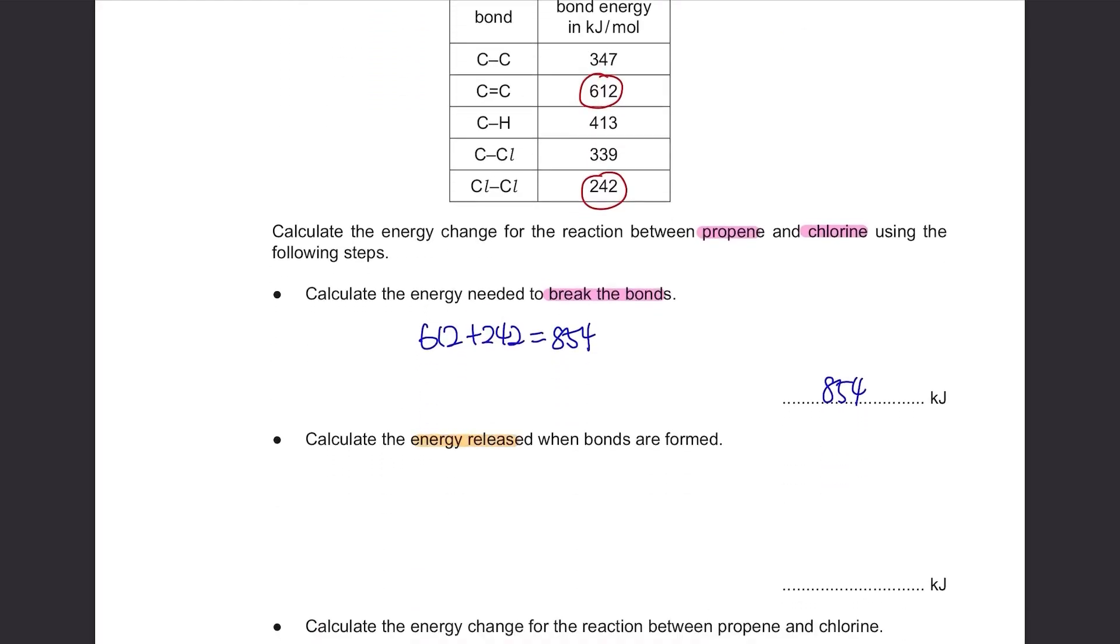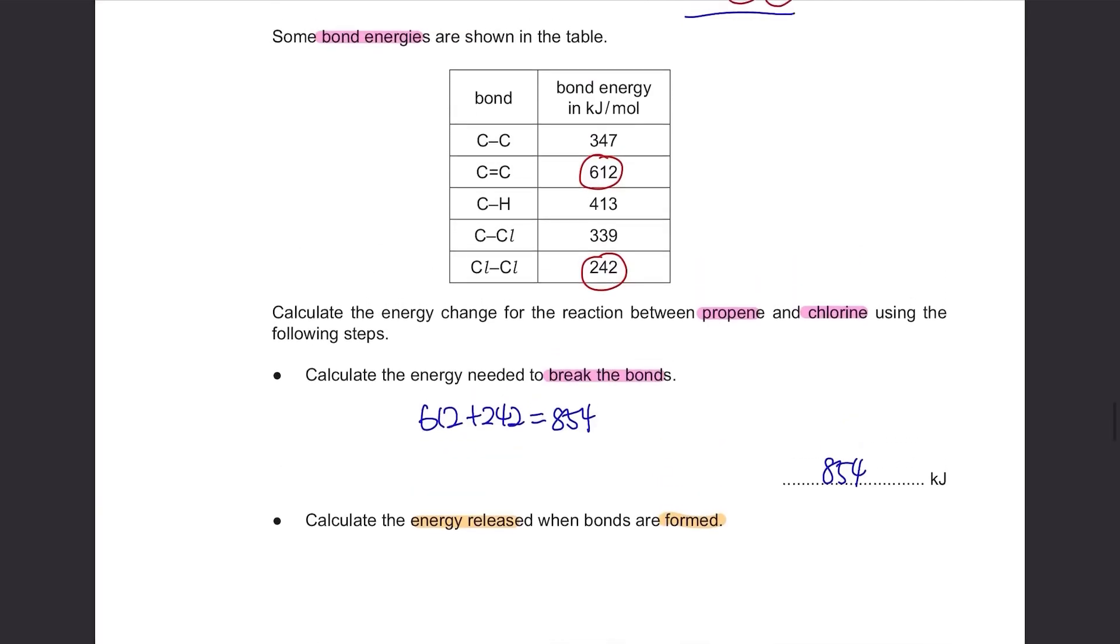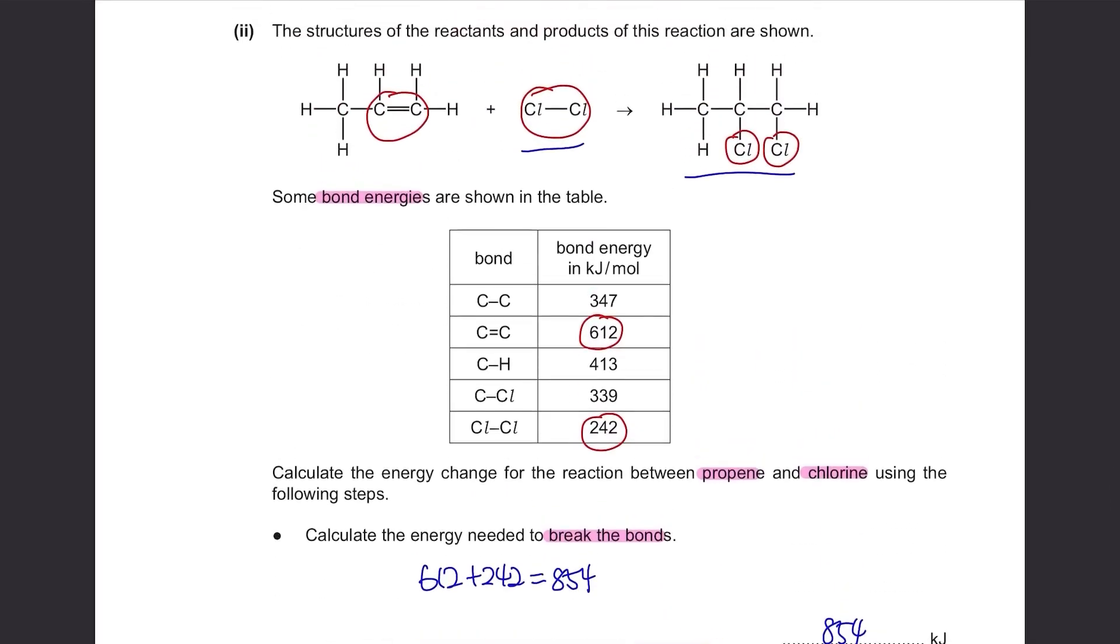Calculate the energy released when bonds are formed. This time it's when it's formed, so we need to find it from the product side. We have broken this bond and this bond. So the new bonds that are formed are over here, and also these two C-Cl bonds. So 1 C-C bond and 2 C-Cl bonds, which are 347 plus 2 times 339.